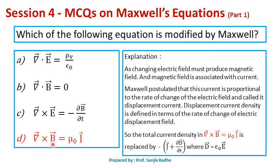Equation four, curl of B bar equals mu naught J bar, was written for an electric field not varying with time. In the case of a time-varying field, the time-varying electric field produces a magnetic field, and this gives rise to a current. Maxwell postulated that this current is proportional to the rate of change of electric field, and called it displacement current. The displacement current density is defined in terms of the rate of change of electric displacement field D bar. Therefore, the equation is modified as curl of B bar equals mu naught (J bar plus del D bar by del t). So option D is correct.